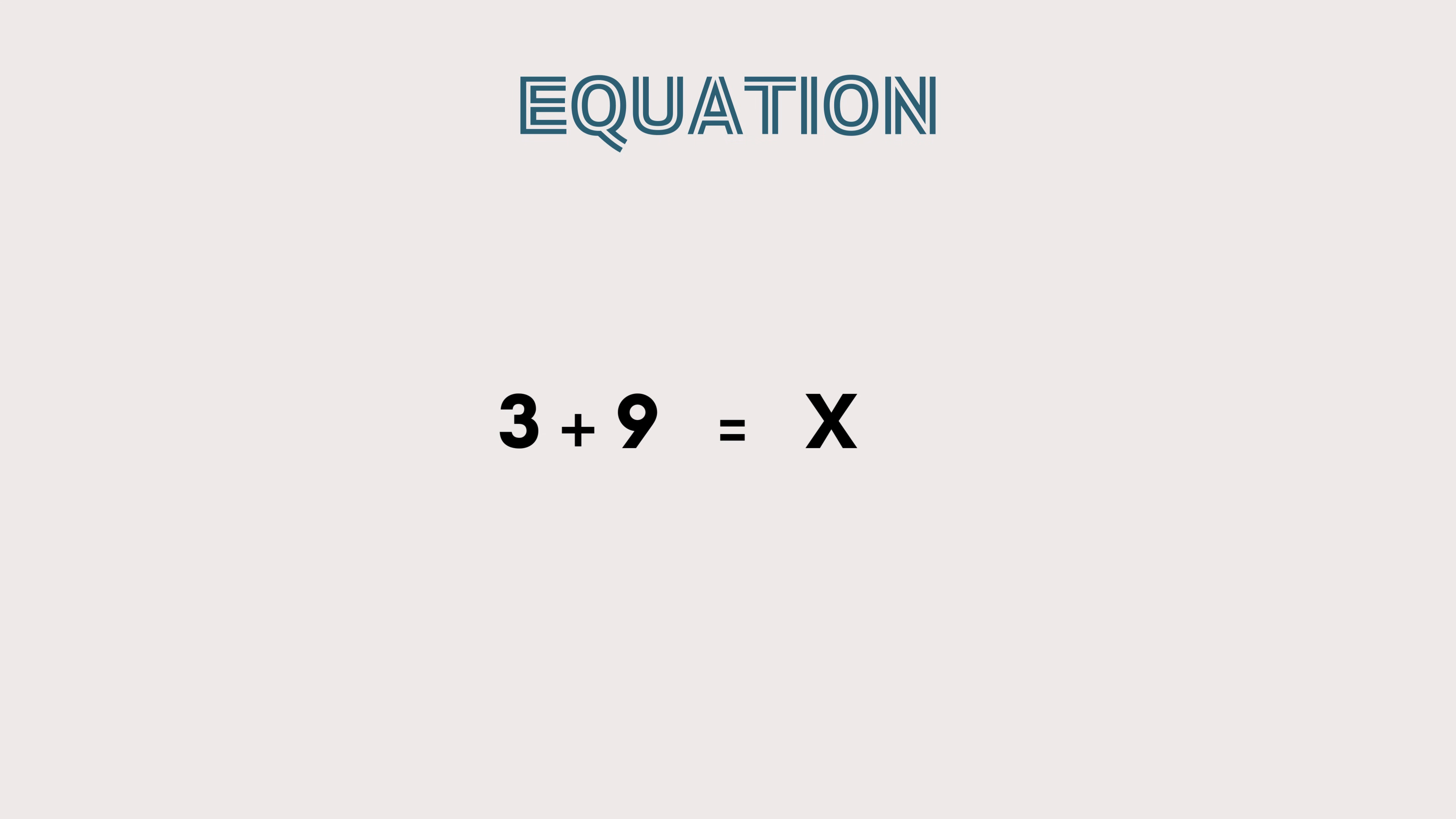An equation says the value of the left-hand side is equal to the value on the right-hand side, with a sign of equality in between two sides. In this case, our equation is telling us that the known values on the left-hand side, 3 plus 9, are equal to what's on the right-hand side, which is the symbol X.